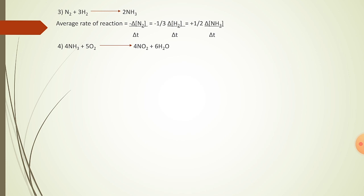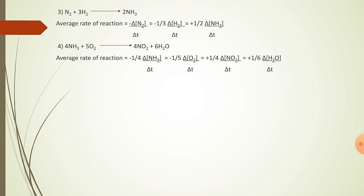Next example: 4NH3 plus 5O2 gives 4NO2 plus 6H2O. The average rate of reaction is: minus 1/4 delta[NH3] divided by delta T, which is equal to minus 1/5 delta[O2] divided by delta T, which is equal to plus 1/4 delta[NO2] divided by delta T, which is equal to plus 1/6 delta[H2O] divided by delta T.